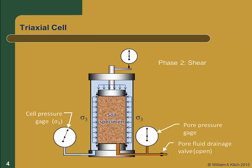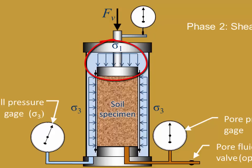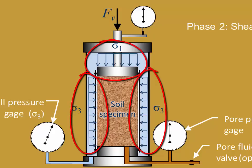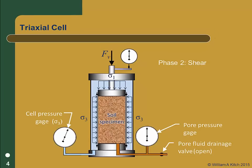The second phase of the test is the shear phase. During this phase, a load is applied to the piston at the top of the cell, which increases the stress at the top of the specimen. Since there are no shear stresses on either the top or the sides of the specimen, these are principal planes. The major principal stress sigma 1 is applied to the top of the specimen, and the cell pressure provides the minor principal stress sigma 3 to the sides of the specimen. The vertical stress is gradually increased until the specimen fails. This is a relatively simple schematic of a triaxial cell; actual cells are more complicated and have additional drainage lines.